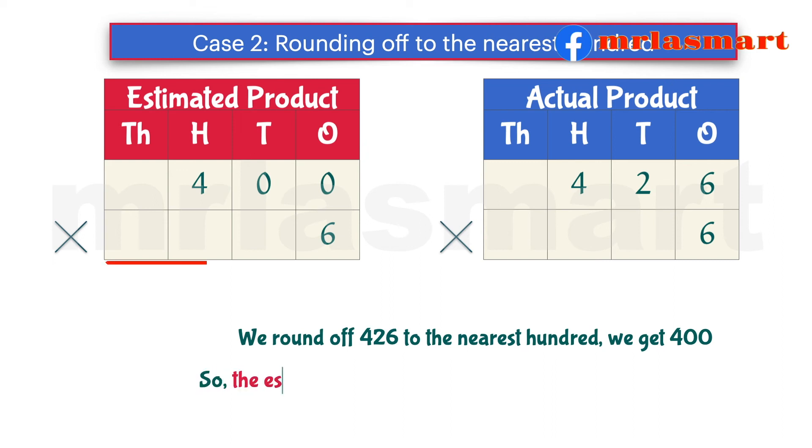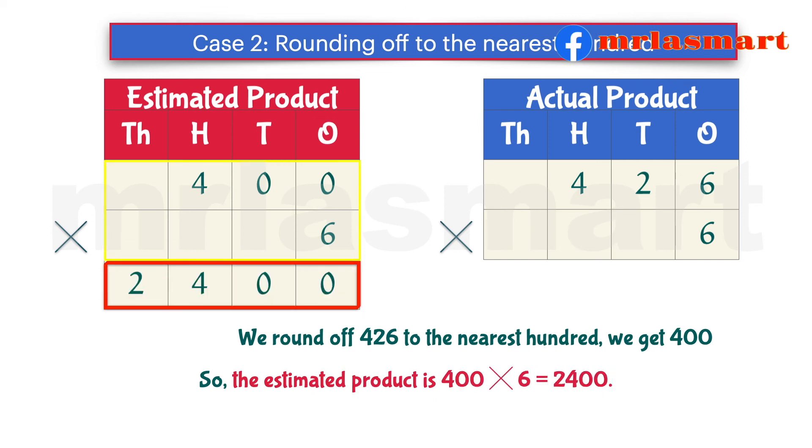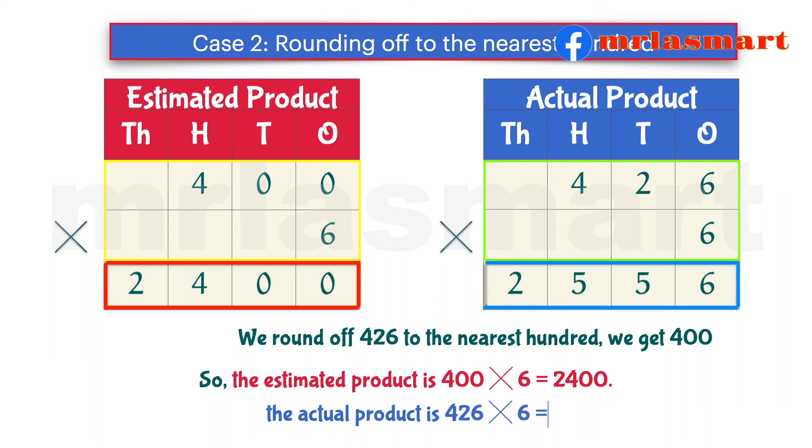So, the estimated product is 400 multiplied by 6 equals 2,400. The actual product is 426 multiplied by 6 equals 2,556.